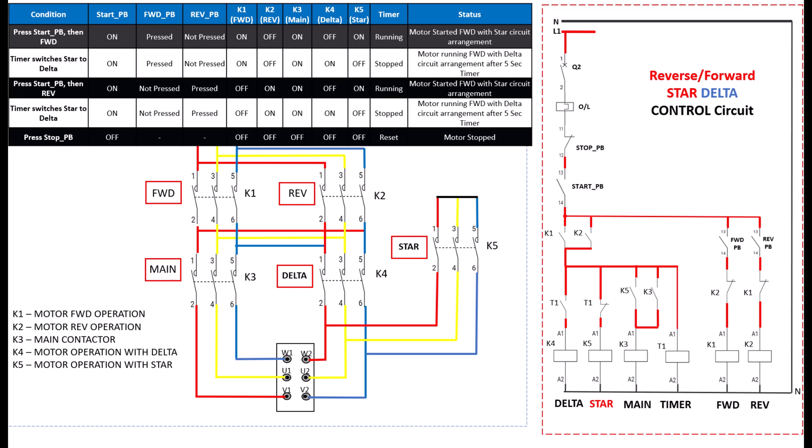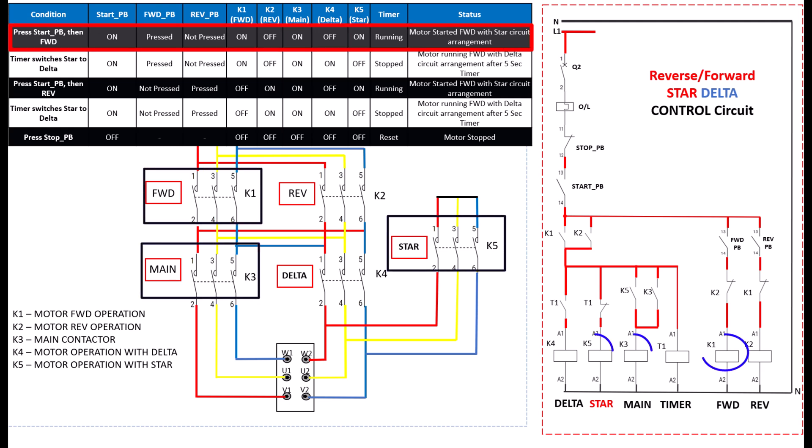Case one. You need to run the motor in forward direction with star configuration and then delta configuration. When you press the start push button, followed by the forward push button, what happens? K1 forward contactor, K3 main contactor, and K5 star contactor engage. The motor starts running in the forward direction using the star configuration. After five seconds, the timer deactivates K5 star contactor and energizes K4 delta contactor through the interlock. Now, the motor continues to run in the forward direction in full delta mode.